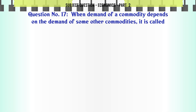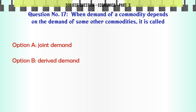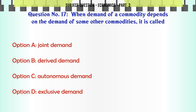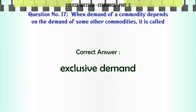When demand of a commodity depends on the demand of some other commodities, it is called: A. Joint demand. B. Derived demand. C. Autonomous demand. D. Exclusive demand. The correct answer is: Exclusive demand.